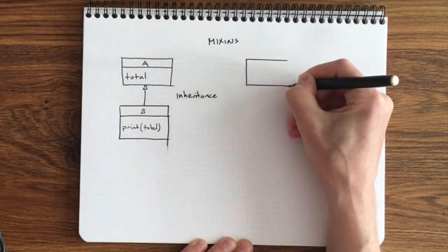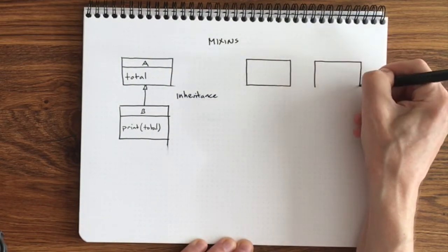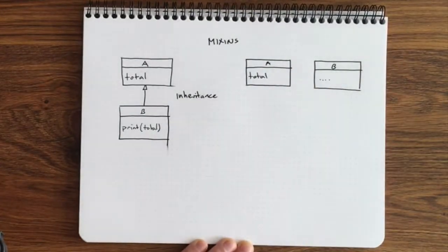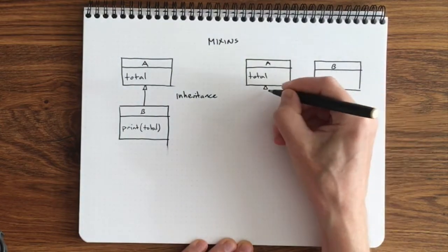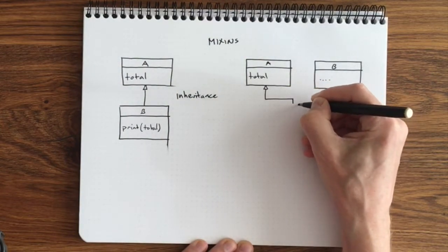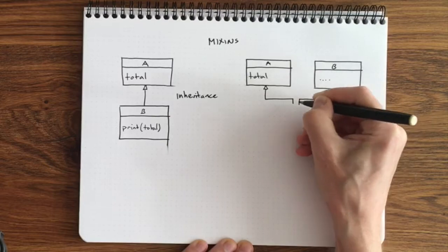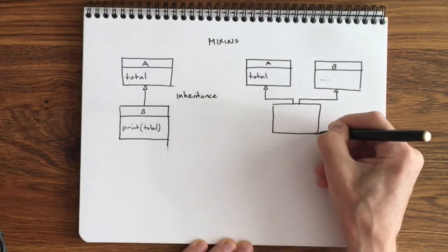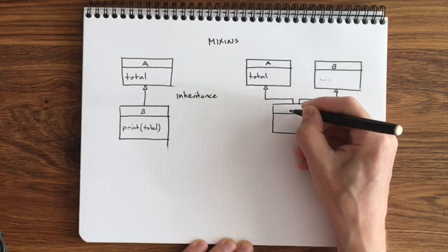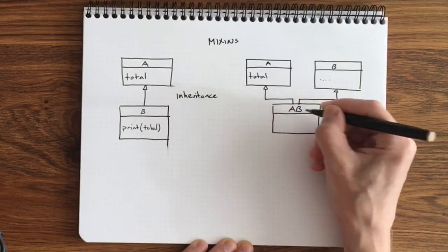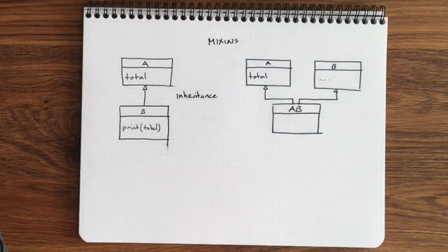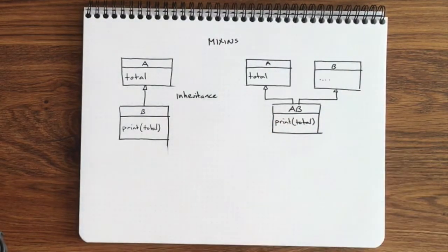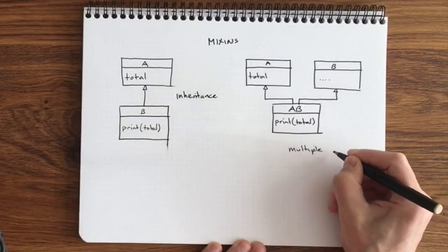Let's have a look at multiple inheritance. Class A has the total property, and class B has some other things. We create class AB that inherits from class A and B. It combines the functionality of class A and class B in class AB. Class AB will implement our printTotal function. This is multiple inheritance.